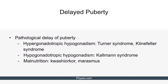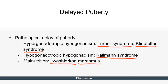Pathological delay of puberty can be caused by hypergonadotropic hypogonadism, hypogonadotropic hypogonadism, and malnutrition. Typical examples of hypergonadotropic hypogonadism include Turner syndrome and Klinefelter syndrome. Examples of hypogonadotropic hypogonadism include Kallmann syndrome. And finally, examples of malnutrition disorders include Kwashiorkor and Marasmus.